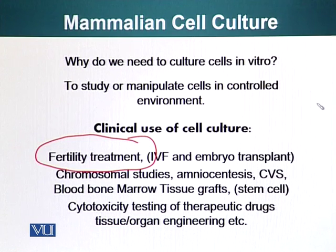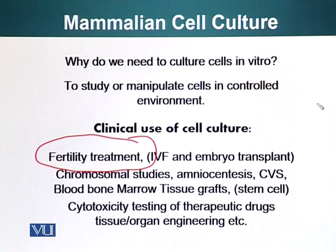Additionally, people use cell cultures to test out new drugs — for example, to ascertain the toxicity of a new drug. Traditionally, people can do that on different animals like rats, mice, or rabbits. But these animals are not human beings. Human tissue has the potential to respond differently to a particular agent than these animals, so we can expose human cells to these different drugs which we want to test.